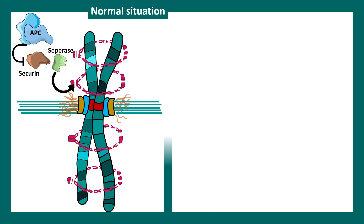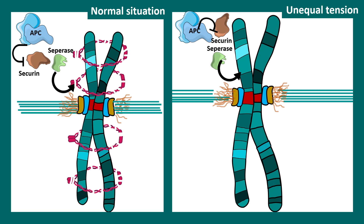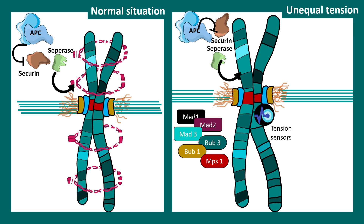If there is unequal tension, tension sensors near the kinetochore region trigger the activation of molecules such as MAD1 and MAD2. These MAD proteins inhibit APC. When APC is inhibited, securin is not degraded, and securin holds the separase complex so chromosome separation cannot happen. The cell waits until the tension normalizes and then segregation proceeds, ensuring equal segregation of chromosomes into daughter cells.